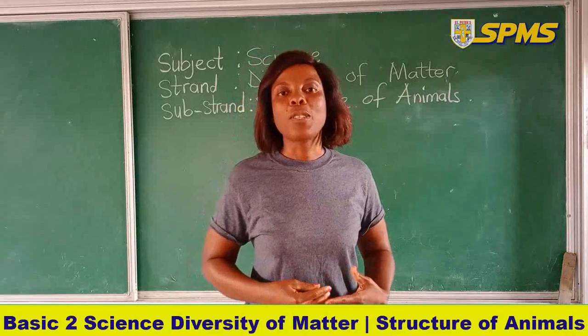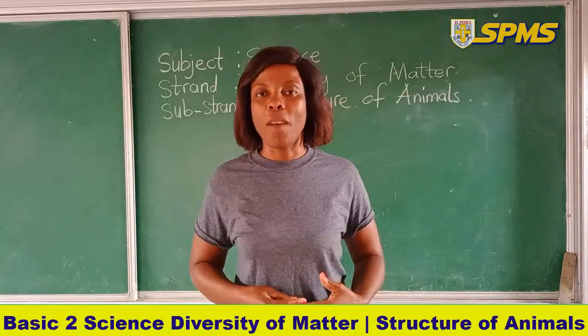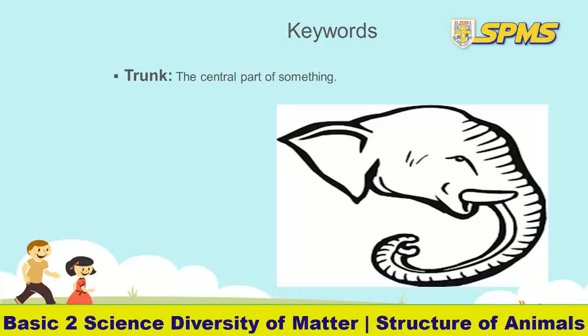Before we continue with today's lesson, let's look at our key words. Our first key word today is trunk. Trunk is the central part of anything. Animals have trunks — like the trunk of an elephant. But the one I'm going to use today is the middle part or the central part of an animal.